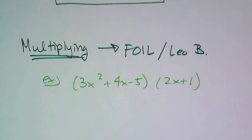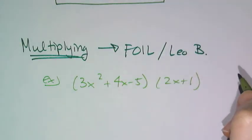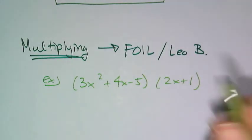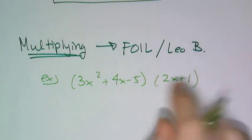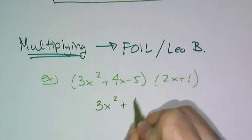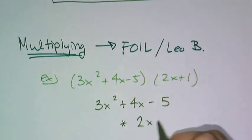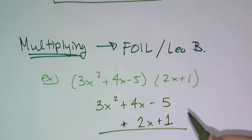Now this leads us to multiplying polynomials, and multiplying polynomials we've also done, and that was FOIL or LEOB multiplication. That's how you multiply polynomials. So I'm going to use LEOB for this one, because FOIL doesn't have enough letters. So I have 3x squared plus 4x minus 5 times 2x plus 1. And remember, I have to multiply everything by 1 first,